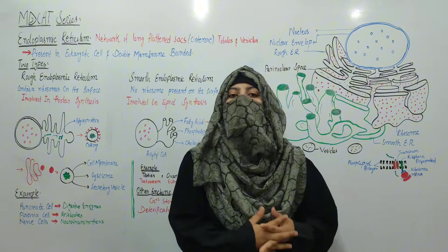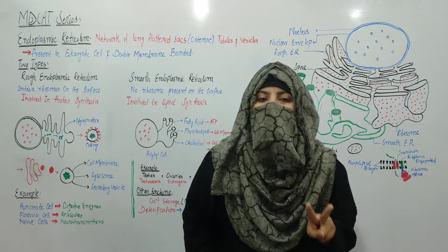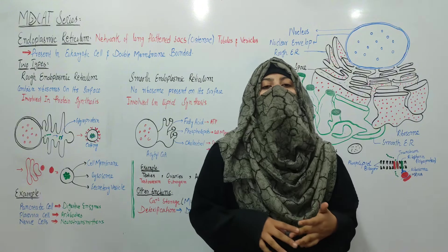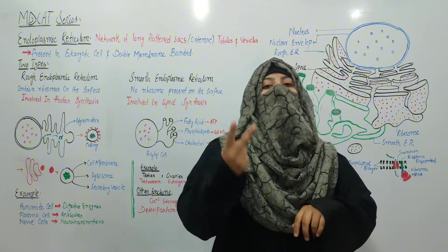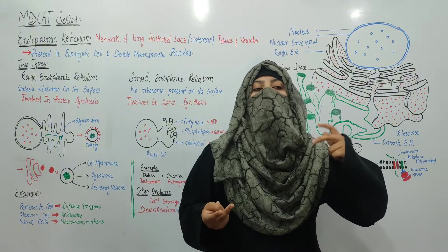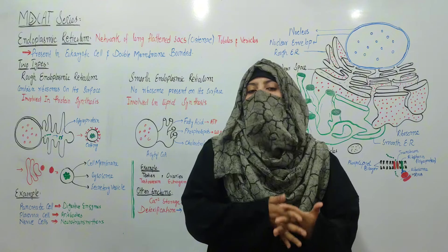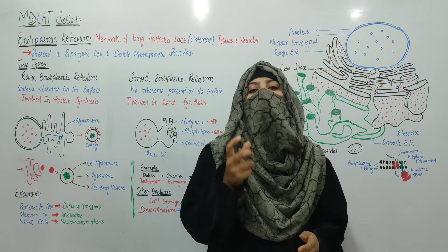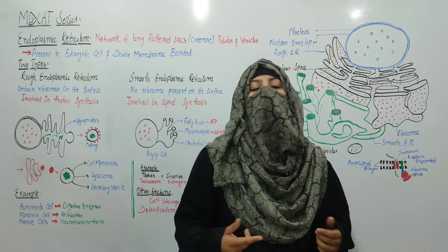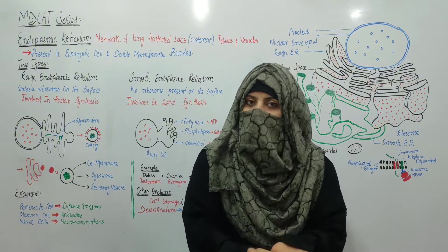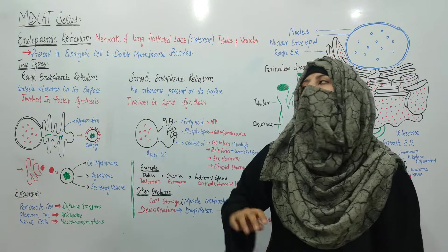Organelles perform various activities and metabolic functions. Organelles have two types: single membrane-bounded and double membrane-bounded. Double membrane-bounded organelles are only present in eukaryotic organisms, but in prokaryotic organisms these membrane-bounded organelles are not present. Let's discuss the endoplasmic reticulum.